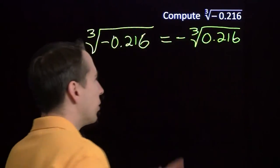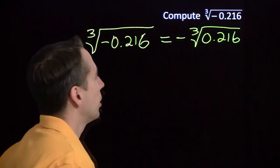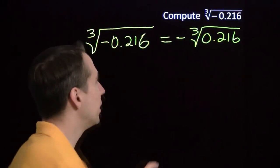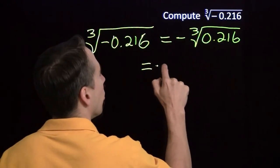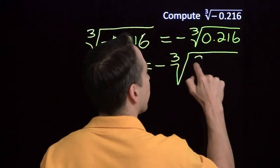So now we're looking for the negative of the cube root of 0.216. I'm not so sure how to deal with that, but I do know how to deal with fractions. So I'm going to write that decimal as a fraction.